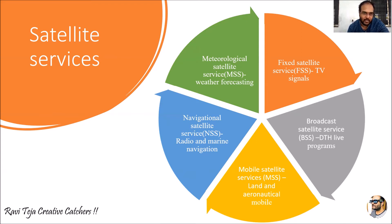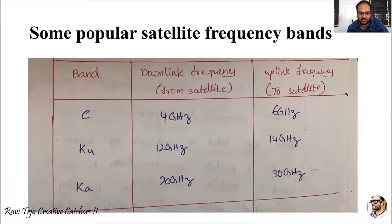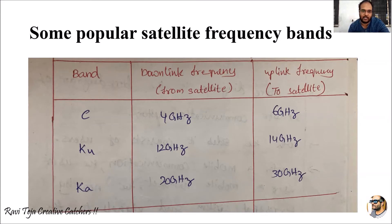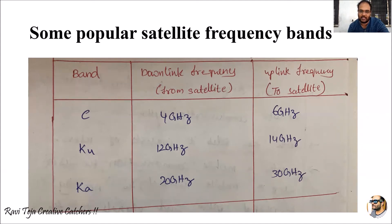Coming to the most popular satellite frequency bands — we have a few frequency bands which we have already seen in the microwave communication system. Since we are using the same microwave signals for satellite communication, microwave signals play an important role for the uplink as well as downlink. The bands we use here are C band, Ku band, and Ka band. These frequencies are most widely used in satellite communications.